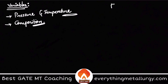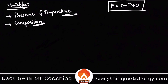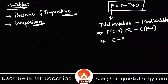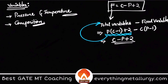The form F = C − P + 2 comes from: F equals total variables minus fixed variables. The total variables are P times (C minus 1) plus 2, and the fixed variables are C times (P minus 1). Simplifying this gives you C minus P plus 2.